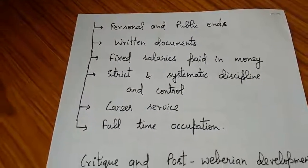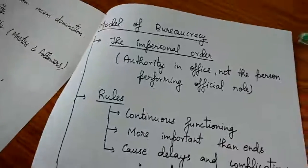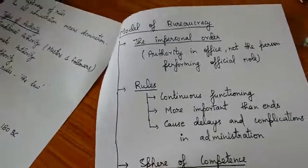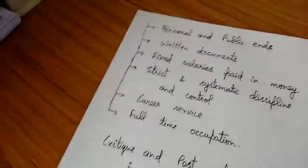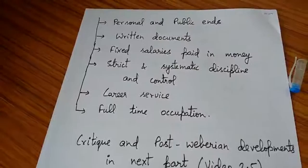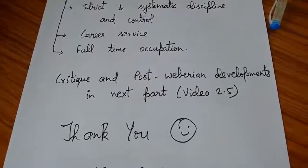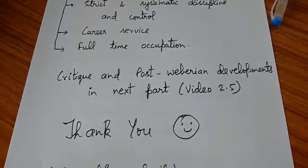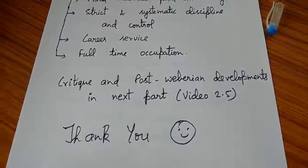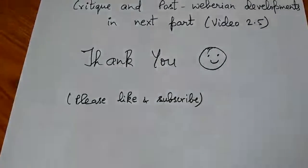In summary, the key characteristics to learn for examinations are impersonal order, hierarchy, rules, and written documents. The critique of Weber's bureaucratic model and post-Weberian developments will be covered in the next part, video 2.5. Post-Weberian developments are very important. Thank you — please like and subscribe.